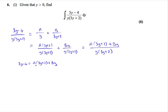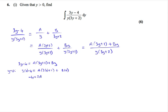To find the value of A, we make y equal to 0. Substituting gives: 3(0) - 4 equals A(3(0) + 2) plus B(0), which simplifies to -4 equals 2A. Dividing both sides by 2 gives A equals -2.